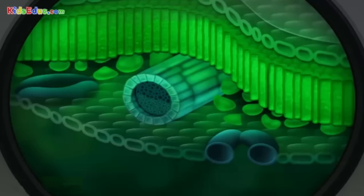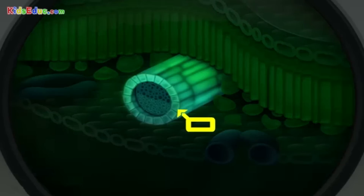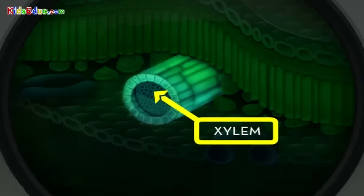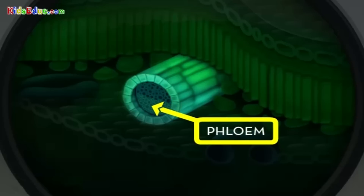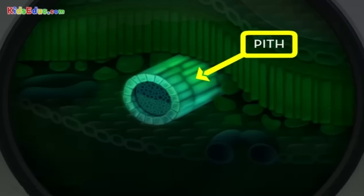But what about the veins in a leaf, which can be seen on the surface? They are made up of three major parts. The xylem are tubes that bring water up from the roots. These lie over the phloem, which are tubes that take sugar back down to fuel growth. And pith wraps around the xylem and phloem to provide strength and protection.